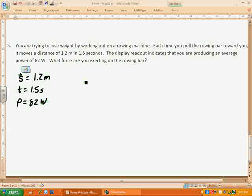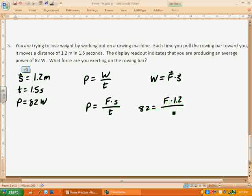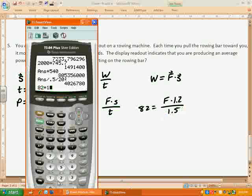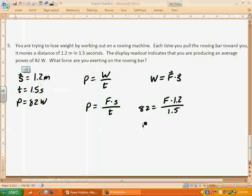We know that power is equal to work over time. We know that work is equal to force times displacement, so let's go ahead and put that straight in for work. So power is going to be equal to the force times the displacement over the time. So we have the time, we have the power, we have the displacement, that means we can now solve for force. So we're going to go 82 equals the force times 1.2 divided by time, which is 1.5, and so we're going to take 82, we're going to multiply by 1.5 and then we're going to divide by 1.2, which means we're exerting 102.5 newtons of force.